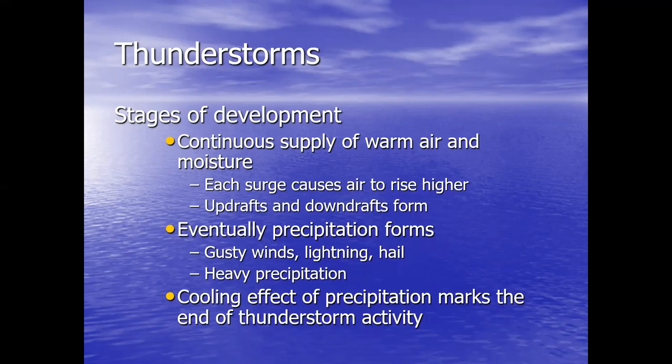The updrafts are what keep the cloud getting ever higher. As that warm air gets higher, it cools down, so there will be an opposite downdraft. Then that air warms up, causes convection — another convection cell begins and it rises — and then there's another downdraft. So a thunderstorm is just a series of updrafts and downdrafts.